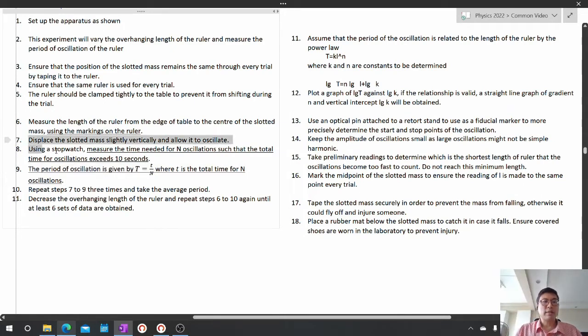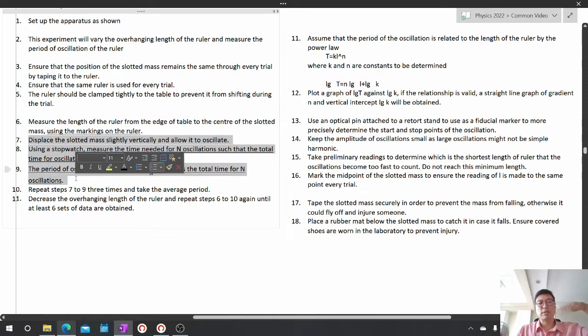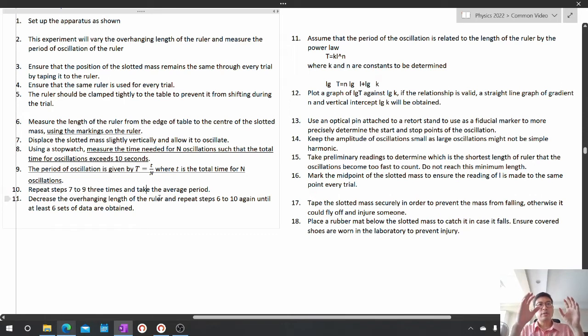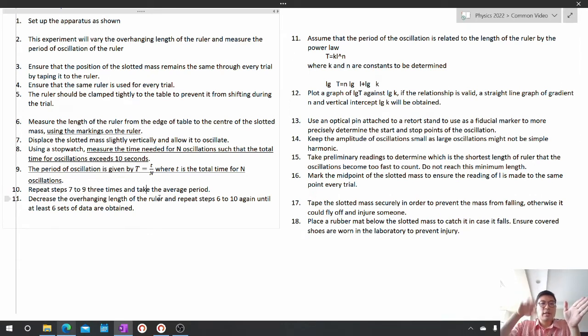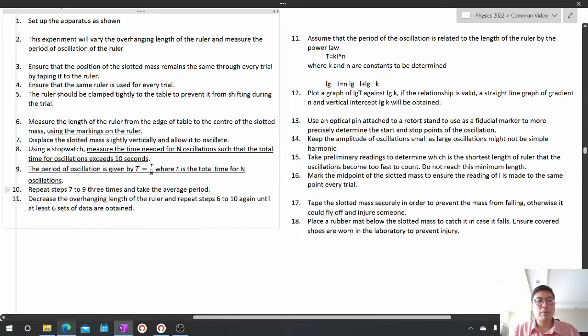Now repeat steps 7 to 9. Basically, we shake it three times and then take the average period. Then after we got three readings for one length, we're going to shorten the length again and then repeat from 6 to 10 until six sets of data are obtained. So we repeat three times and take the average and then we get six sets of data.